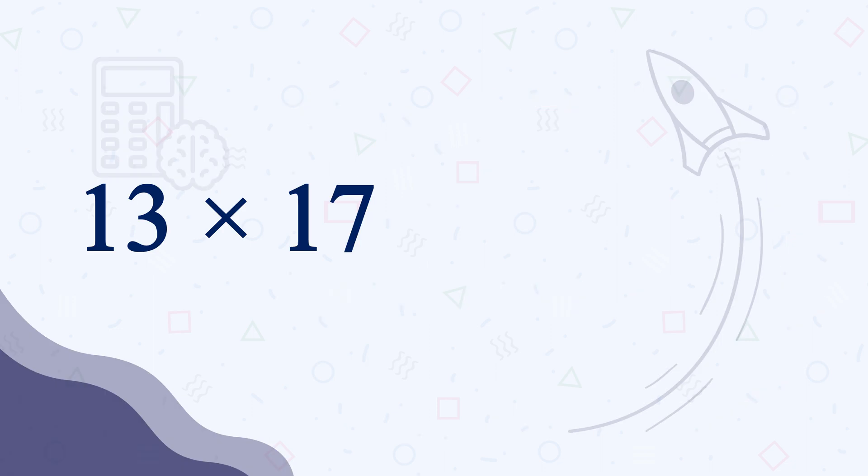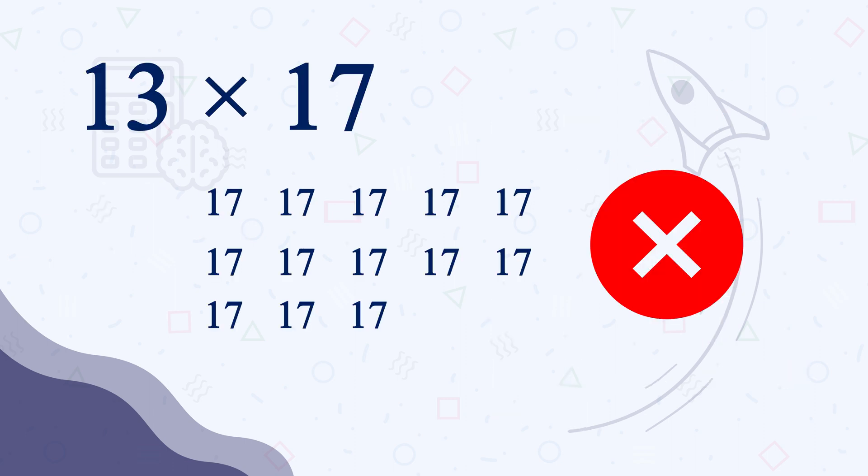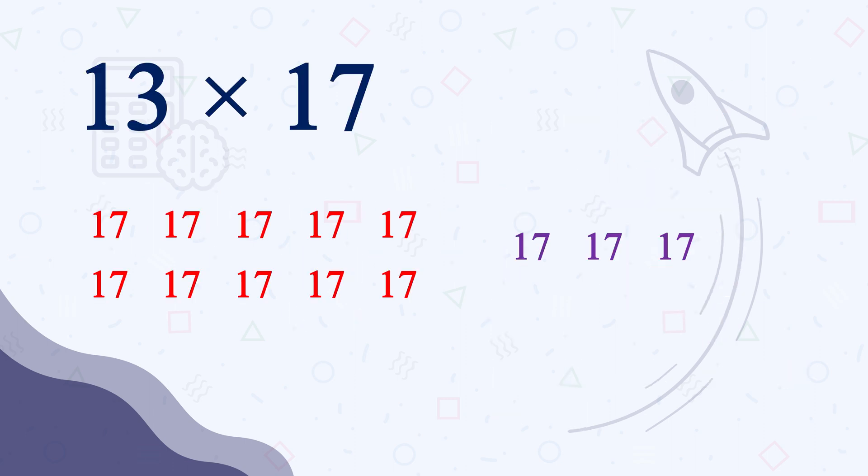So when we find 13 times 17, what does it mean? It means we need to count 17 for 13 times or we need to count 13 for 17 times, right? What if we don't count 17 for 13 times, rather split the math and count 17 for 10 times first and then count 17 for 3 times more.